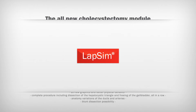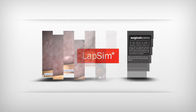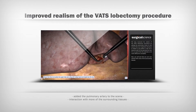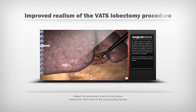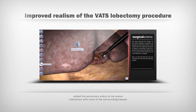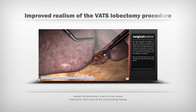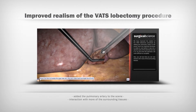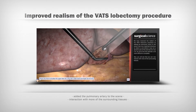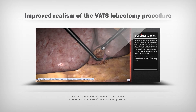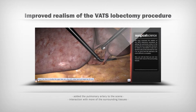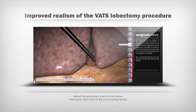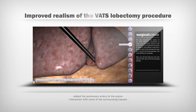We've improved the realism of the VATS lobectomy procedure by adding the pulmonary artery to the scene. This is an important structure to relate to, and before it was not a dynamic part of the exercise, but now it is. So you'll find the exercise a bit more difficult to complete. You will also see that you can now interact with more of the surrounding tissues.